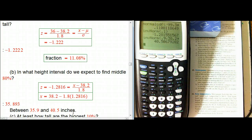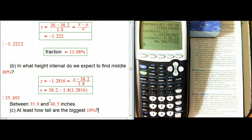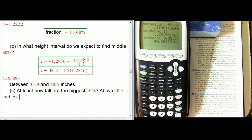That interval gives us the middle 80%. So if we don't care about the shortest 10% and the tallest 10%, we could make furniture to fit those sizes — though that seems a little unpleasant. For part C, how tall are at least the biggest 10%? We've already answered that: the biggest 10% is everybody above 40.5 inches, which we had to calculate to answer part B anyway.